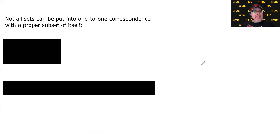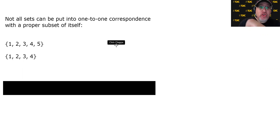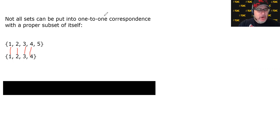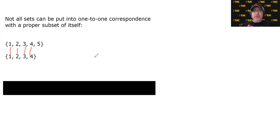Not all sets can be put in one-to-one correspondence with a proper subset of themselves. For example, consider the finite set {1, 2, 3, 4, 5} with cardinality five, and the proper subset {1, 2, 3, 4} with cardinality four. If we try to set up a one-to-one correspondence, we run into a problem with the five: either we leave it unpaired — which can't happen in a one-to-one correspondence — or we pair it with somebody, which forces a two-to-one correspondence. So no matter what we do, we can't put these in a one-to-one correspondence: either somebody's left out or somebody has more than one number paired with them.